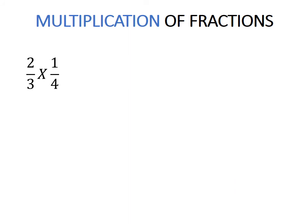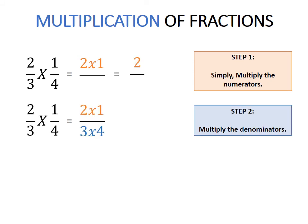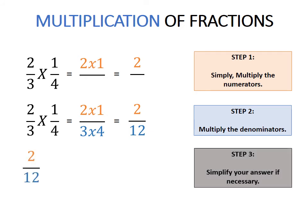Next, we have multiplication of fractions. Simply multiply the numerators: 2 times 1 equals 2. Then multiply the denominators: 3 times 4 equals 12. This gives 2 over 12. Simplify if necessary — 2 and 12 are both divisible by 2: 2 divided by 2 equals 1, and 12 divided by 2 equals 6. So 1 over 6 is the final answer.